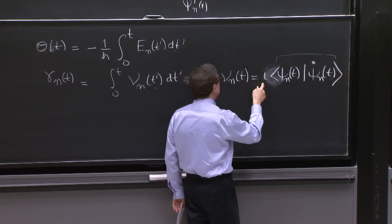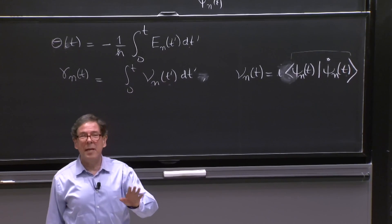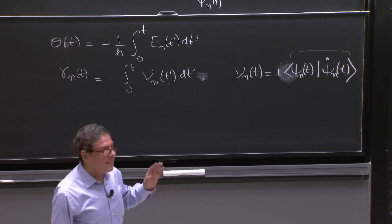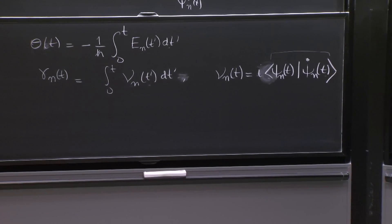And the second part, this gamma n, is called the geometric phase. This is the phase that has to do with Barry's phase. And it's a phase that we want to understand.